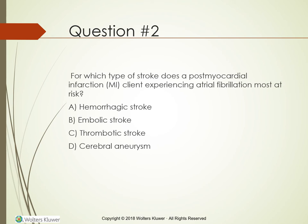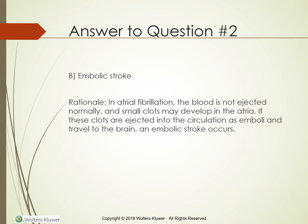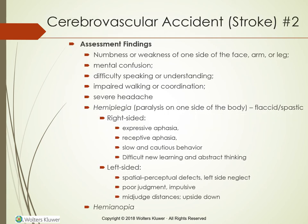Question: For which type of stroke is a post-myocardial infarction client experiencing atrial fibrillation most at risk? A) Hemorrhagic stroke, B) Embolic stroke, C) Thrombotic stroke, D) Cerebral aneurysm. The answer is B — embolic stroke. In atrial fibrillation, blood is not ejected normally and small clots may develop in the atria; if these clots are ejected into the circulation as emboli and travel to the brain, an embolic stroke occurs.